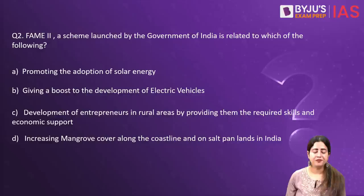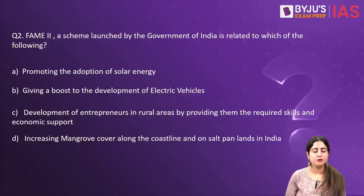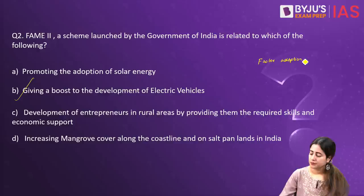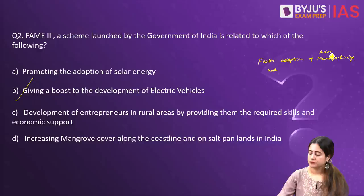Talking about the second question: it says FAME, a scheme launched by the Government of India, is related to which of the following? Options are: A — promoting the adoption of solar energy; B — giving impetus or a boost for electric vehicles; C — development of entrepreneurs in rural areas; D — increasing mangrove cover along the coastline. The correct answer is B because FAME stands for Faster Adoption and Manufacturing of Hybrid and Electric Vehicles.